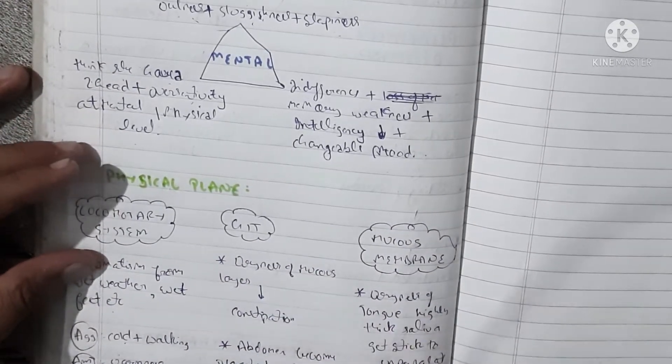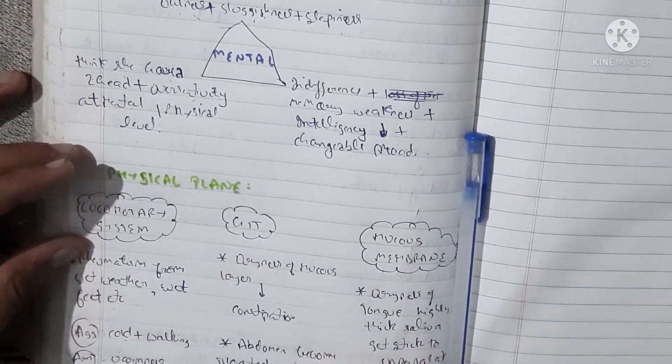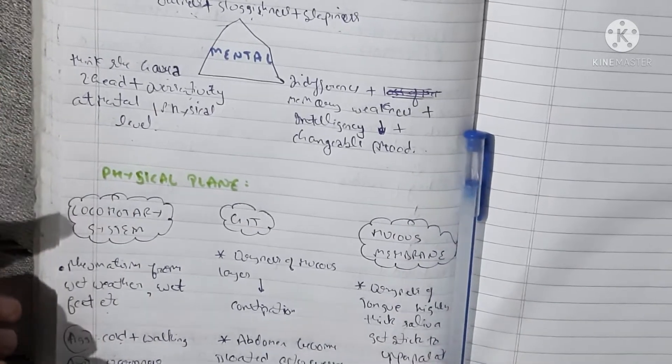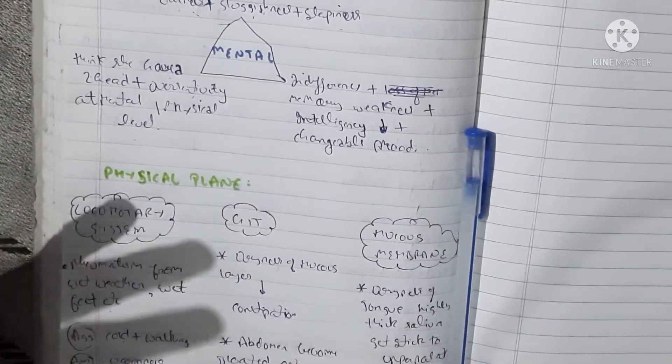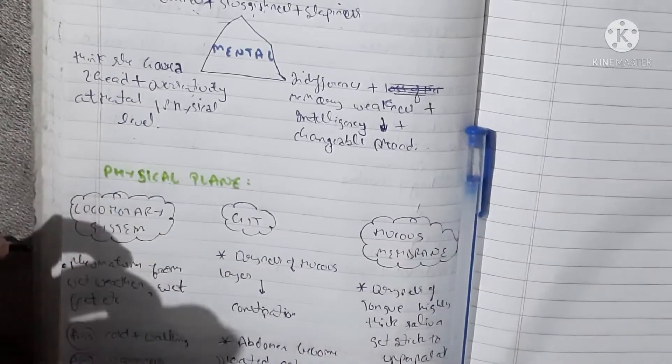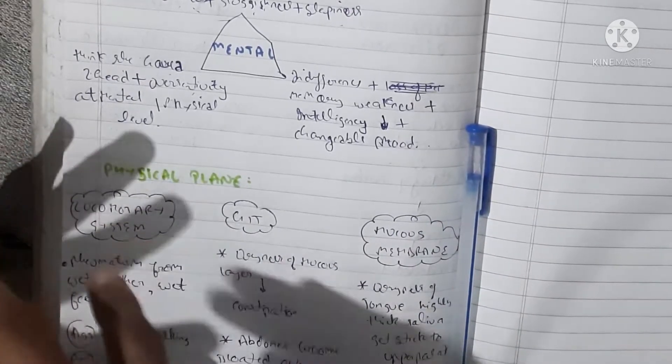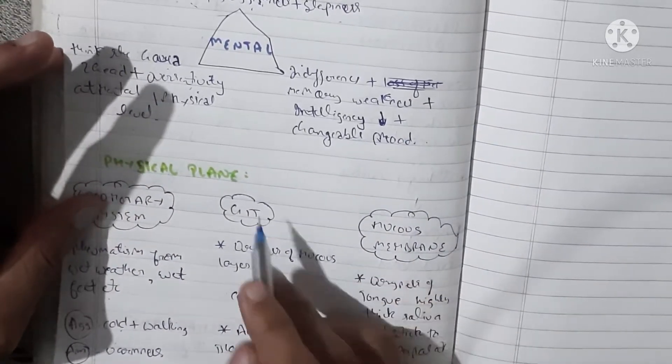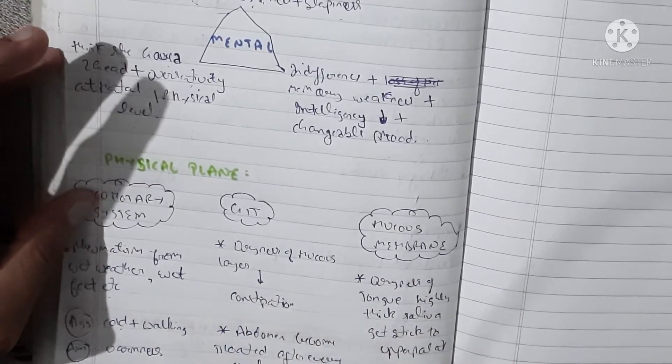In GIT, there is flatulency. Flatulency in which form? Flatulency in stomach and abdomen. If it is GIT flatulency, we can think about Nux Moschata.